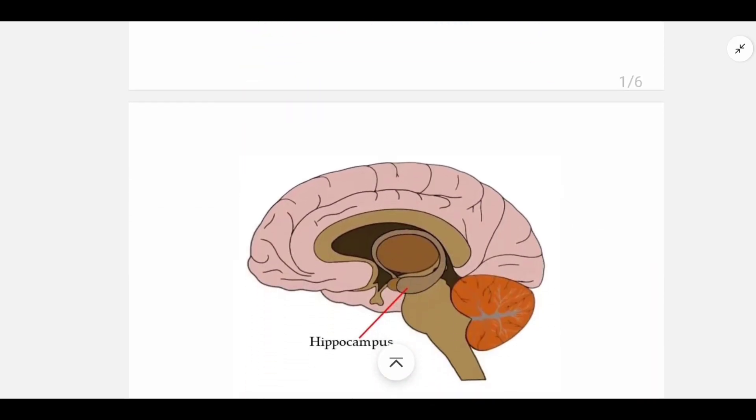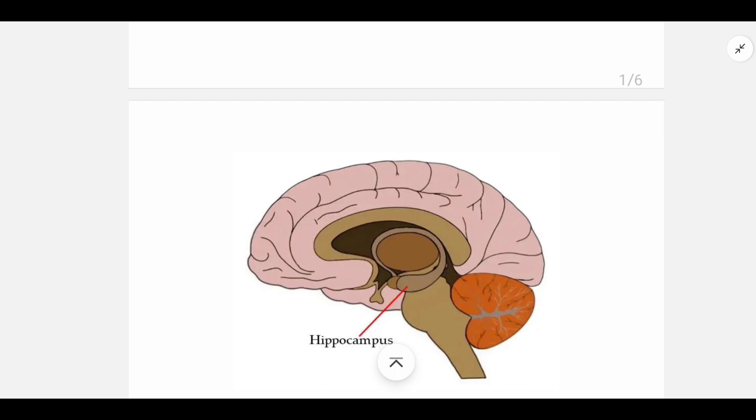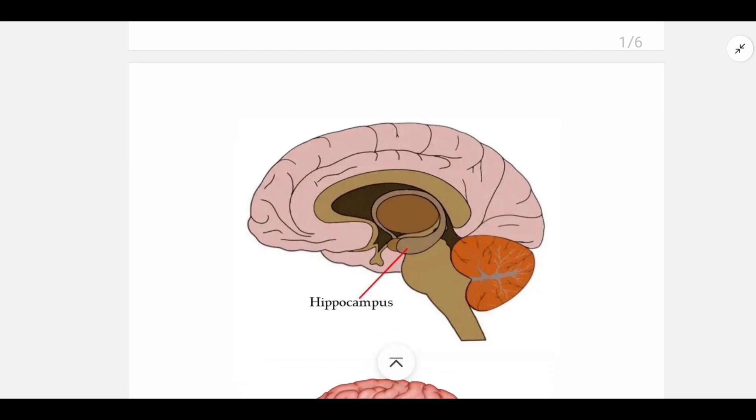So what is memory? Memory means a process that collects information around us, whatever is around us that is needful for us. That information is processed, then stored in our brain, and later we can recall that information according to our need. And sometimes we can recall and use the memory even after a long time. This entire process of memory is controlled by the hippocampus, a part of our brain.